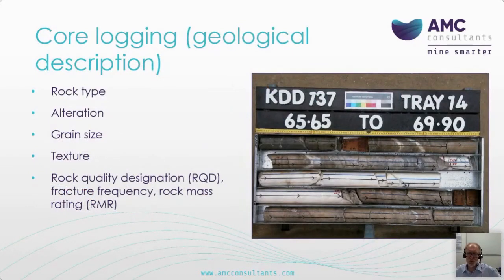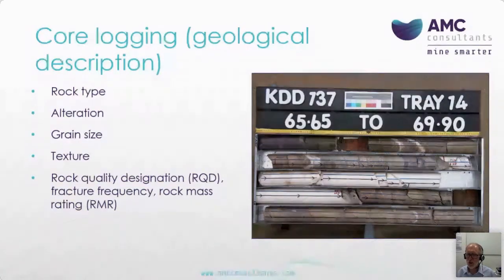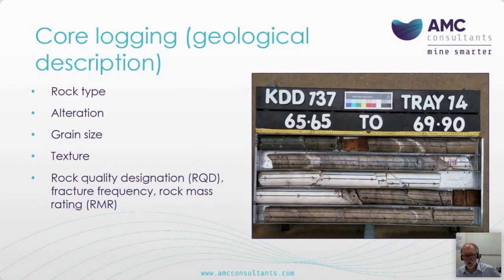Drill core is usually our best source of geometallurgical data — typically we have many thousands of meters spread across the entire deposit. Core provides the greatest amount of detailed geological information such as rock type, alteration, grain size, texture and a variety of geotechnical parameters commonly measured in exploration and resource development programs such as RQD, fracture frequency, rock mass rating and density. Even though much of this information is qualitative, if collected with a high degree of control and guidance it can still be very useful for predicting metallurgical behavior.